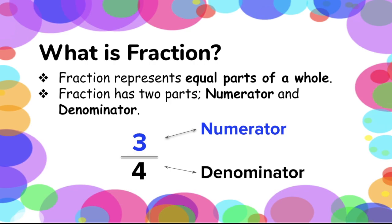Fraction represents an equal part of a whole. Let's say we have an apple pie, and it is divided into four equal parts. Each part is called a fraction. A fraction has different parts — we have a numerator that shows how many equal parts were taken, and a denominator that shows how many of those equal parts make up a whole.